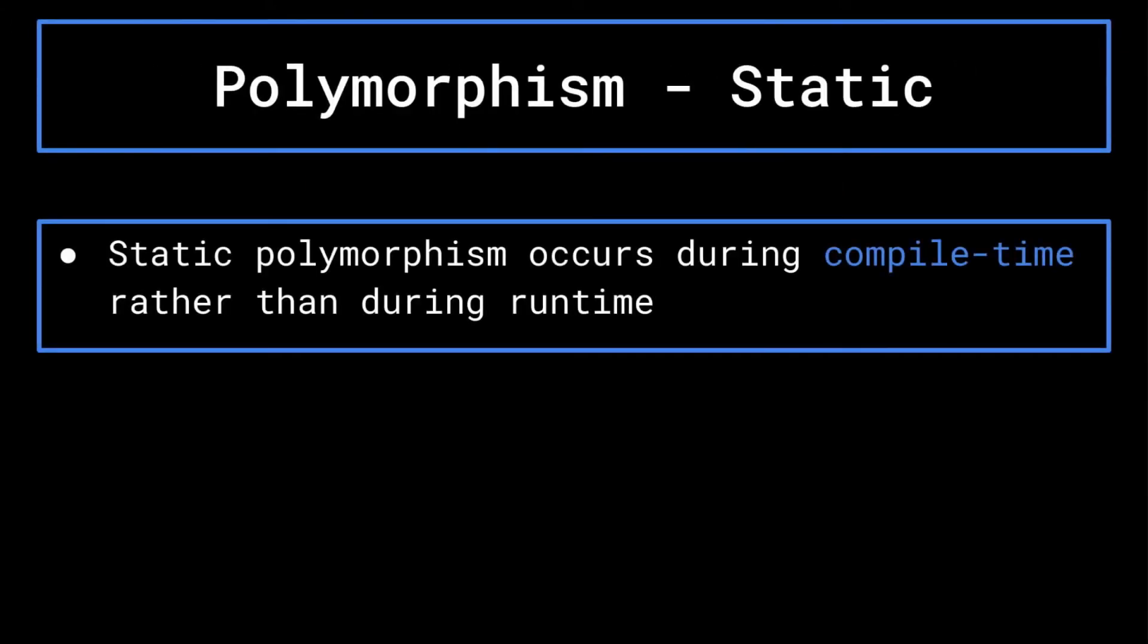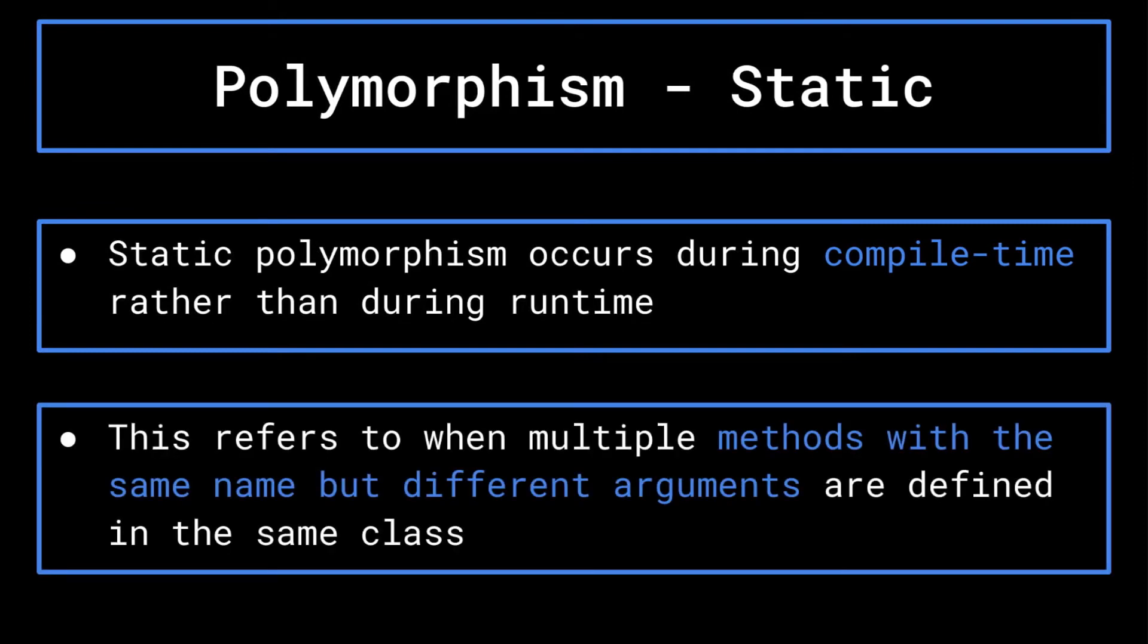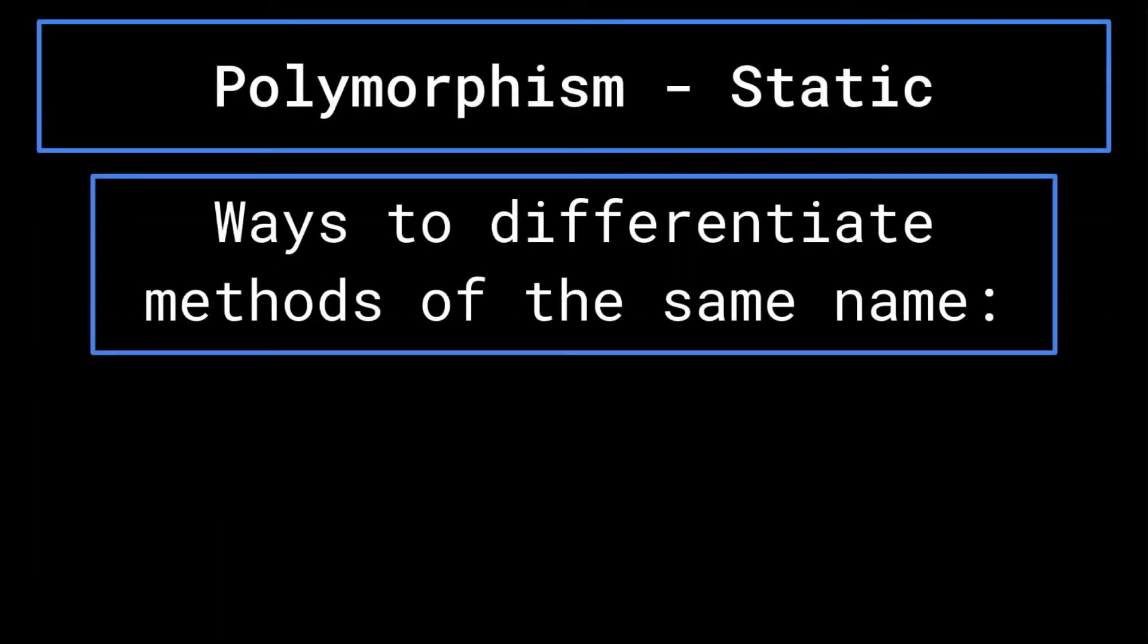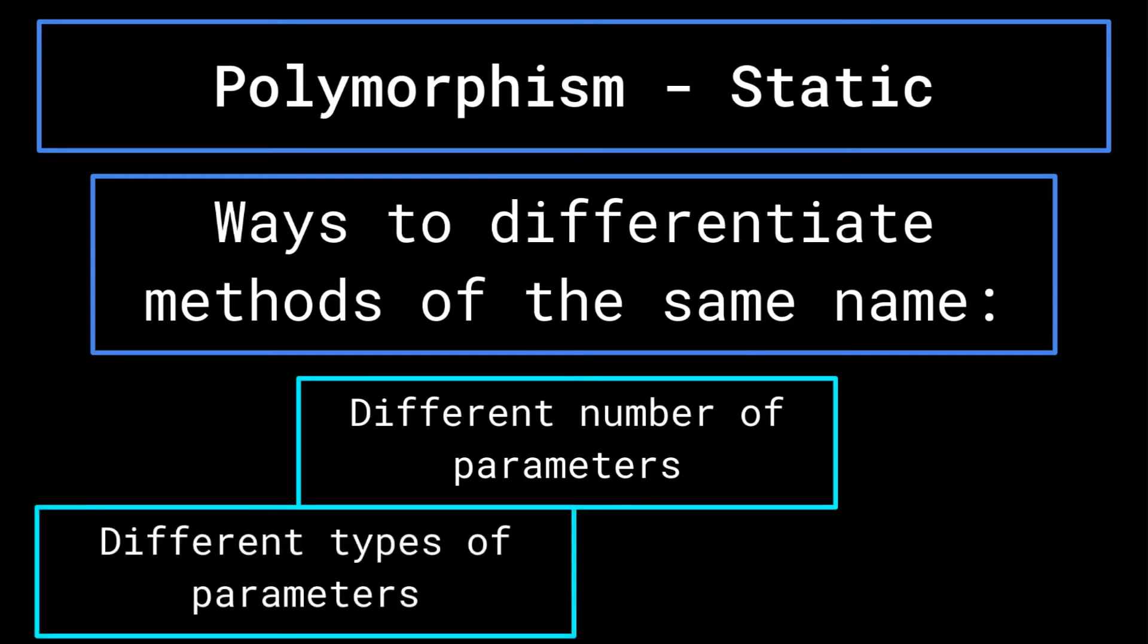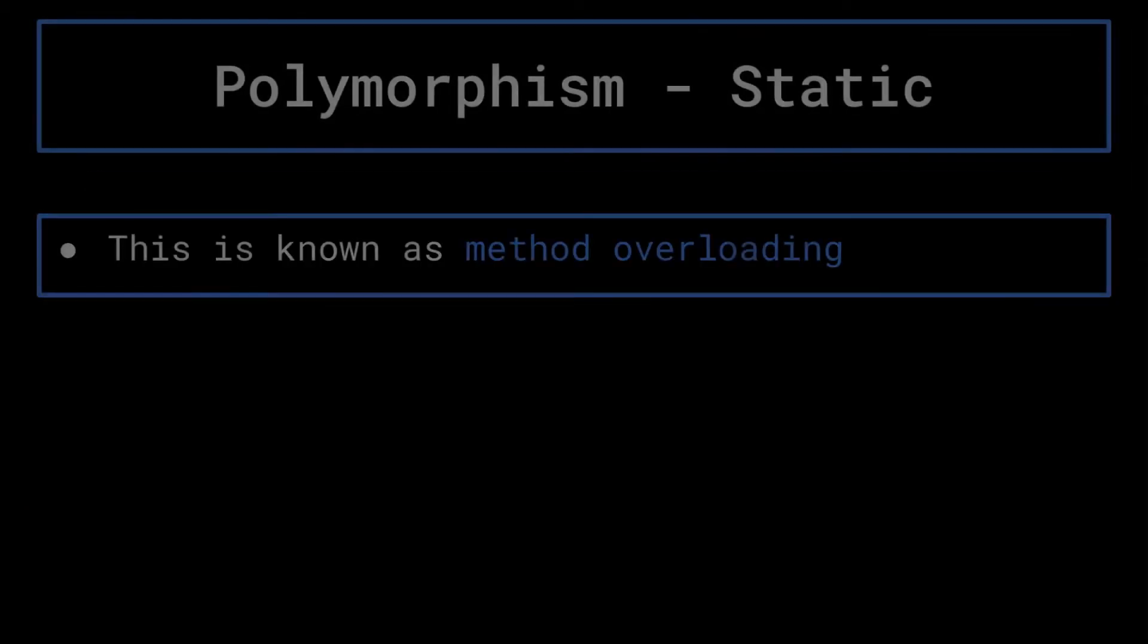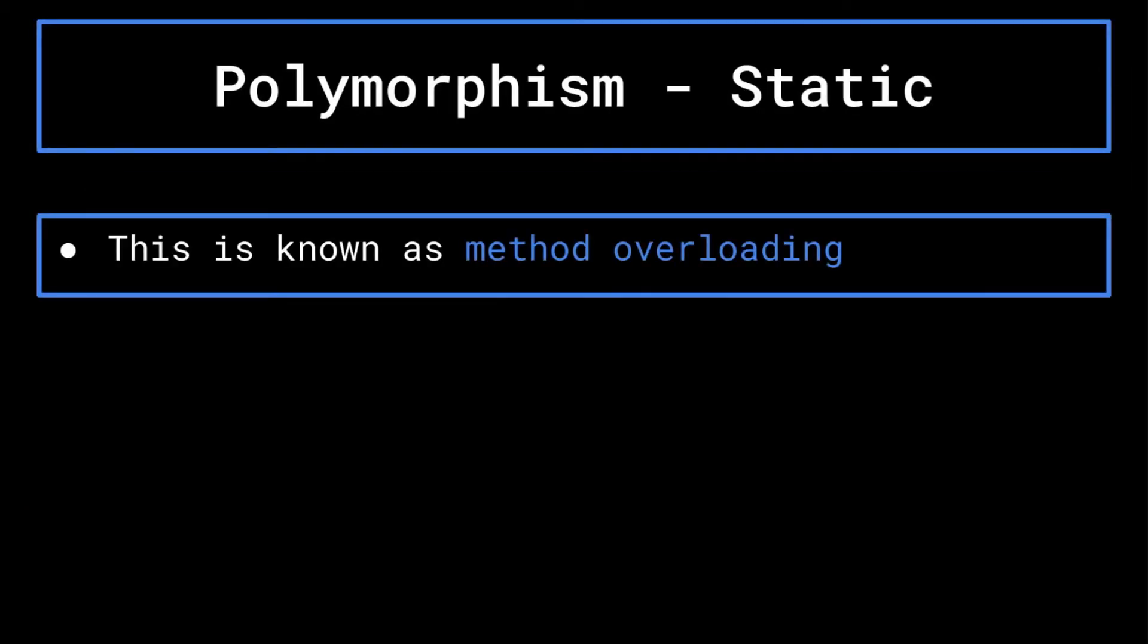The second type of polymorphism is static polymorphism. Static polymorphism occurs during compile time rather than run time. This refers to when multiple methods with the same name are defined in the same class. In this case, the methods are differentiated by their arguments. Either they take a different number of parameters, they take parameters of different types, or they take parameters in a different order than one another. This is known as method overloading.